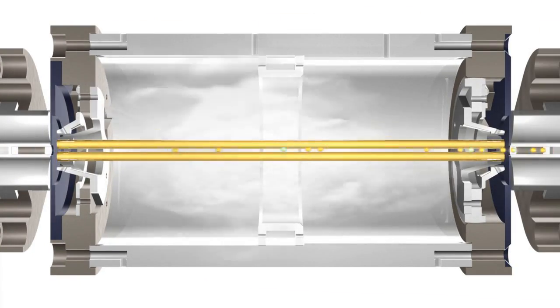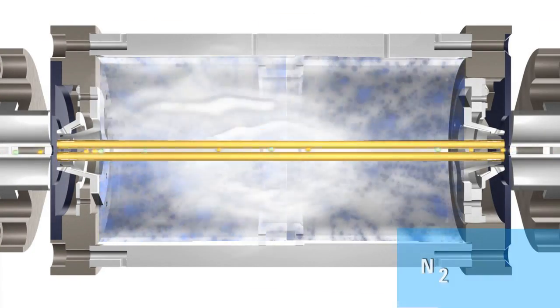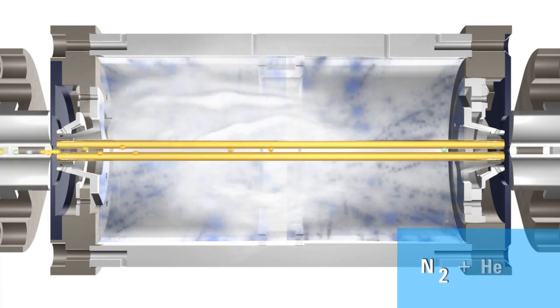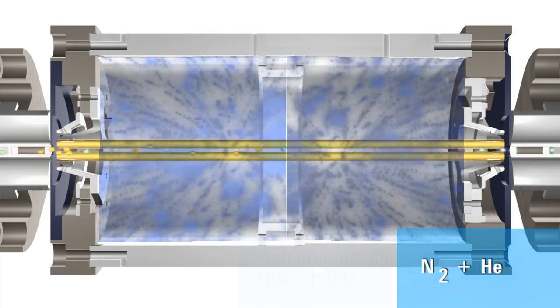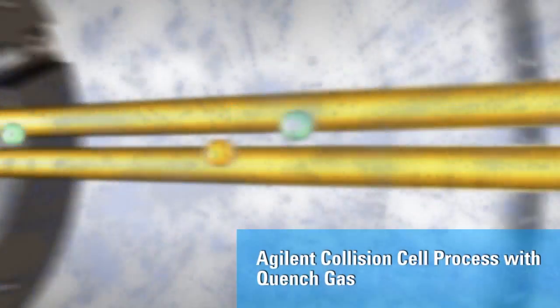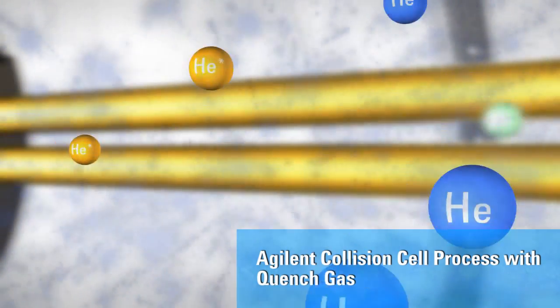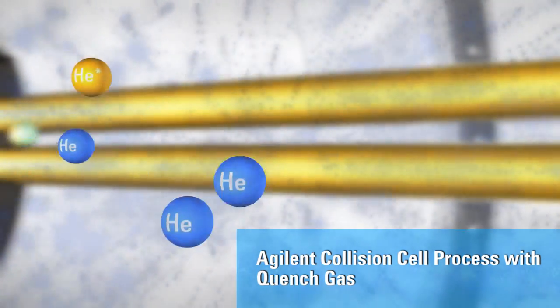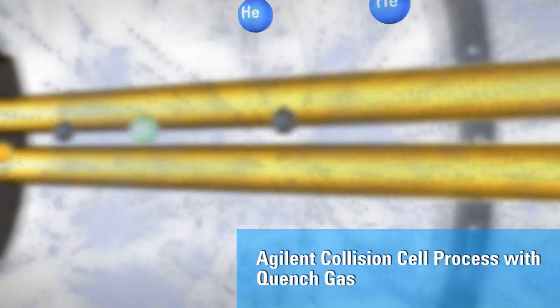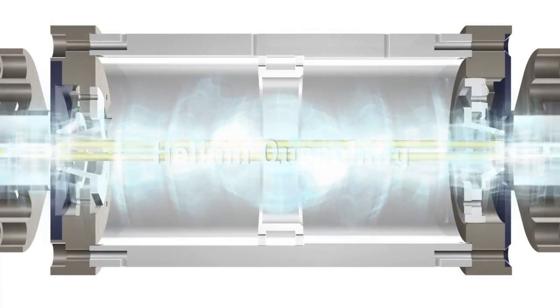During the development of the 7000A, Agilent engineers realized a small flow of helium added to the nitrogen collision gas was a very effective way to reduce the transmission of metastable helium through the collision cell. We call this patent-pending solution helium quenching.